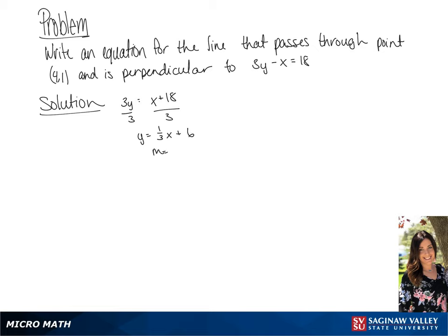Our slope in this case would be one third. To find the perpendicular line we need to take the negative reciprocal of this. So the perpendicular slope will be negative 3.